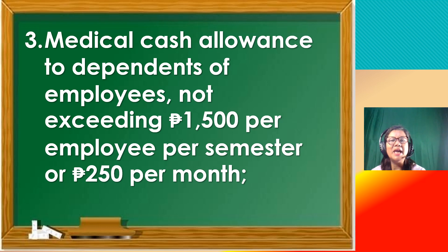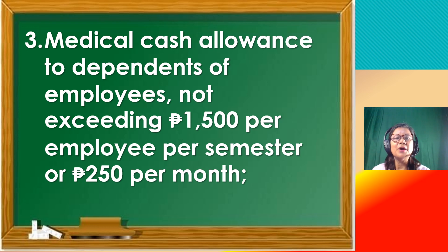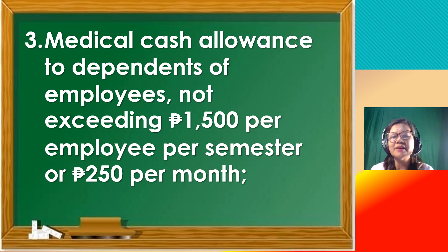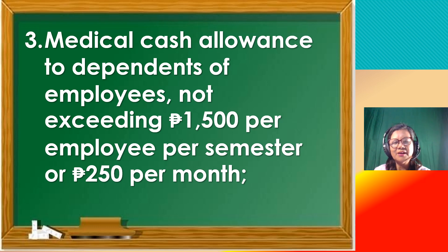Let us move to number 3: medical cash allowance to dependents of employees. The benefits are extended to dependents of employees. It is not exceeding 1,500 pesos per employee per semester, or 250 pesos per month. Therefore, how much will be the total medical cash allowance in one year? The answer is 3,000 pesos. That's correct.